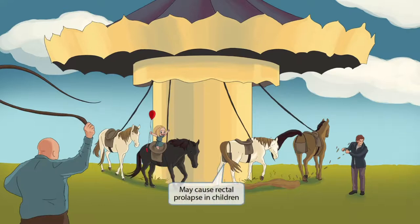In an attempt to avoid too much loose stool, the owner of this merry-go-round has placed little pouches on the back of the horses. This catches the loose stool and makes it easier to clean up later. The little pouch can be thought of as an extension of the gastrointestinal tract, just like rectal prolapse results in the gastrointestinal tract extending out of the rectum. So the pouches on the horses should help you remember that whipworm may cause rectal prolapse in children.